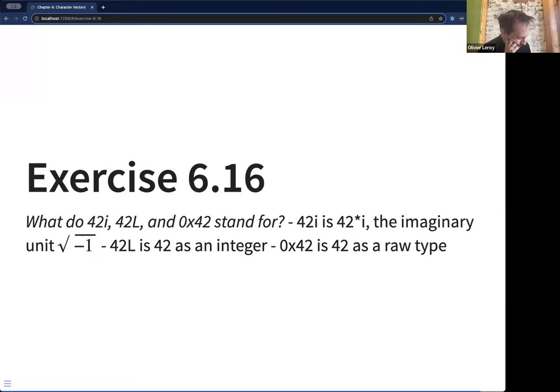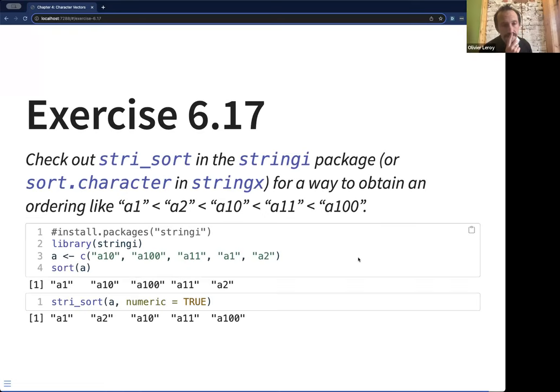And so this was just asking about the different other atomic vector types. I realized my formatting is messed up here in the way that I want to, but basically the i is the imaginary unit. The L is for integer. And I again do not know how to interpret. You can just type typeof it and it will say it's a raw type. So it's just representing 42 as a raw. This was funny. I realized looking at the stringi package is authored by this textbook author. So yeah, it was motivated to have us learn how to use it.